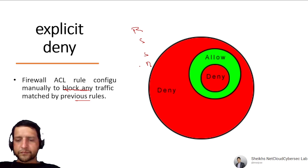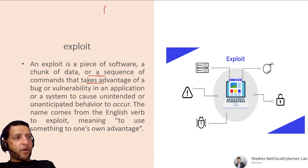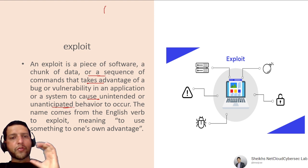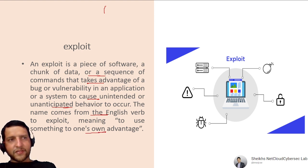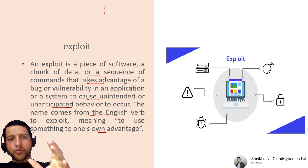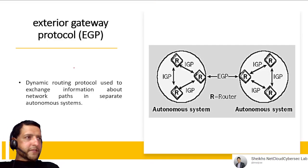An Exploit is a piece of software, chunk of data, or sequence of commands that takes advantage of a bug or vulnerability in an application or system to cause unintended behavior. The term comes from the English verb 'to exploit' — meaning to use something to one's advantage. Social engineering is also a form of exploit, where someone is manipulated for personal gain.